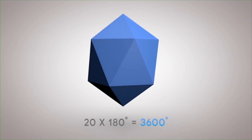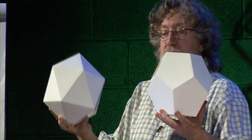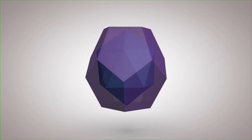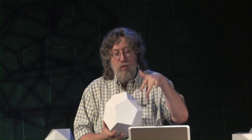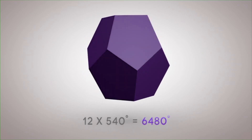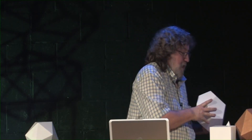Our final solid is the dodecahedron — my favorite shape. This is what Plato referred to as the shape of the universe itself. The dodecahedron has 12 faces and 20 vertices, whereas the icosahedron has 20 faces and 12 vertices — so they're duals of each other. Each pentagonal face has edges of 108 degrees; five times 108 is 540, and twelve times 540 is 6,480. So again we've got the number 9 redundantly occurring. The number 6,480 turns out to be a critically important number as well.